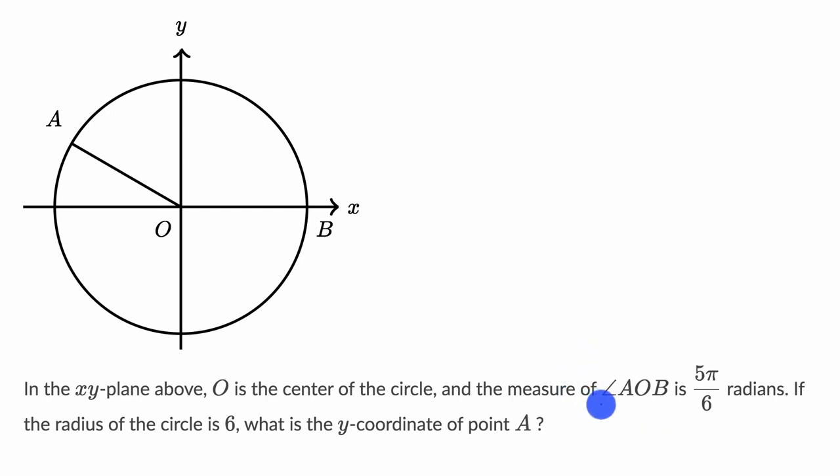So first of all, they're telling us that the measure of angle AOB is five pi over six radians. So AOB, we're talking about this angle right over here, is five pi over six radians. We know that the radius of the circle is, so let me do this in a different color. The radius of the circle is six.